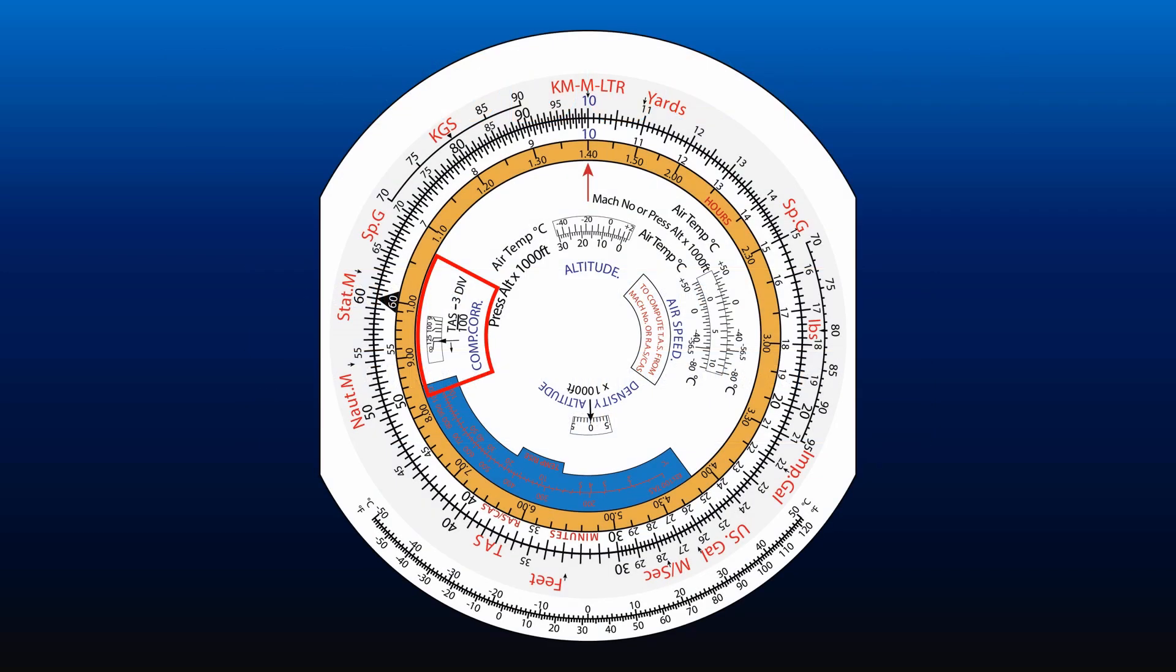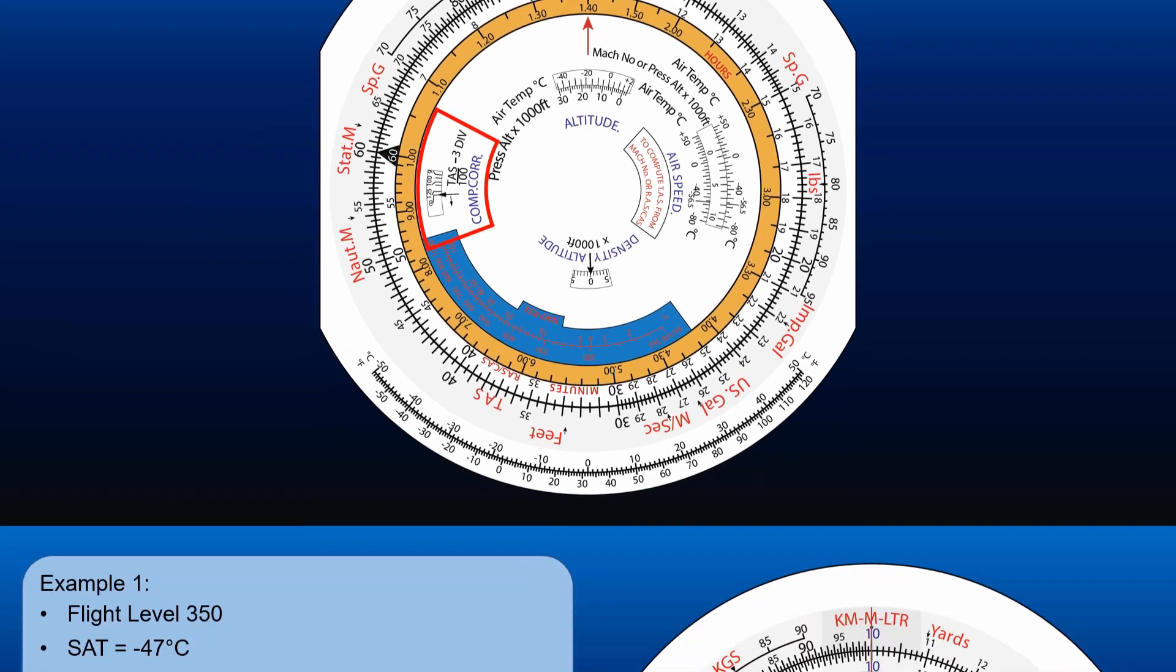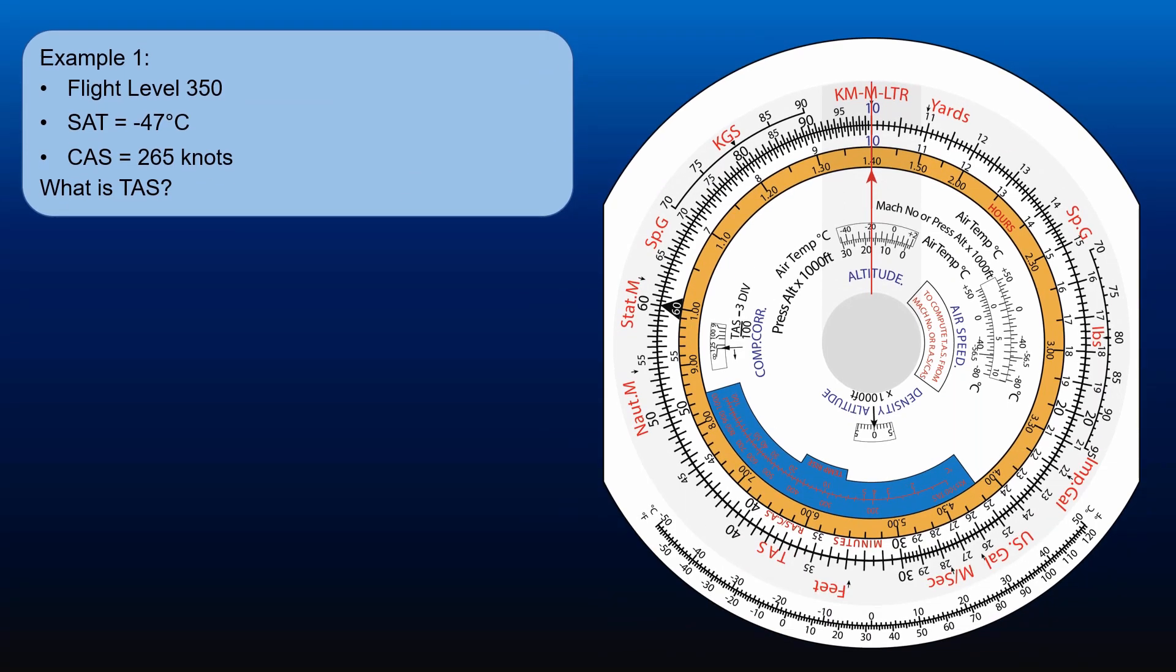To apply compressibility correction, we need to use the compressibility correction window on CRP5, which is highlighted in red on the screen. An example will make the operation clear.